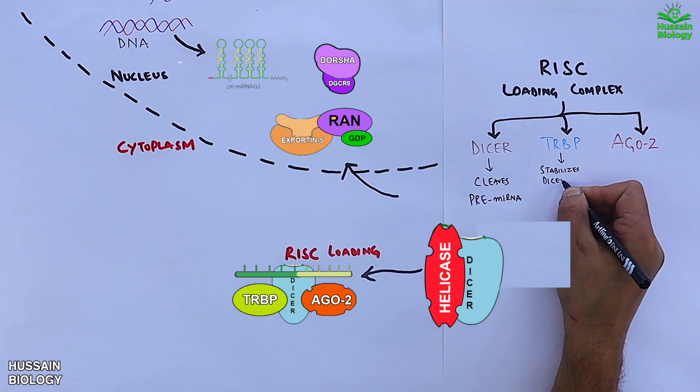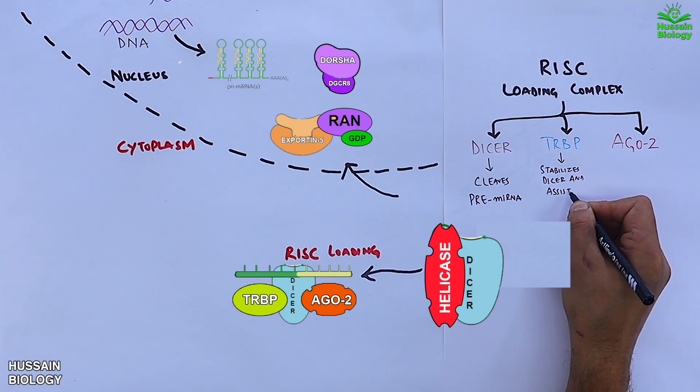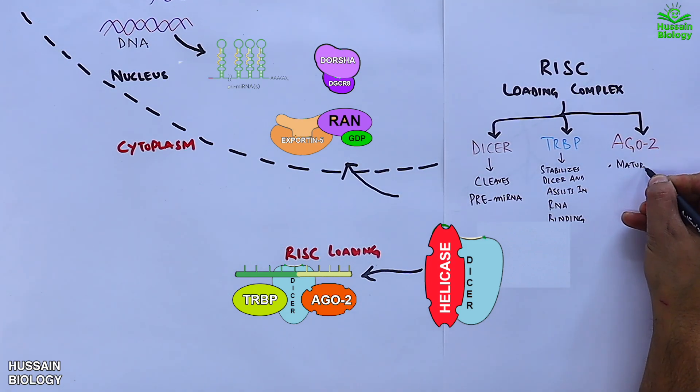TRBP stabilizes DICER and assists in RNA binding. And AGO2 does maturation, guidance, repression, and cleavage.